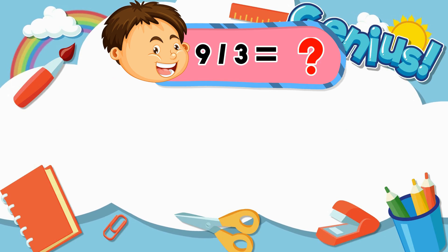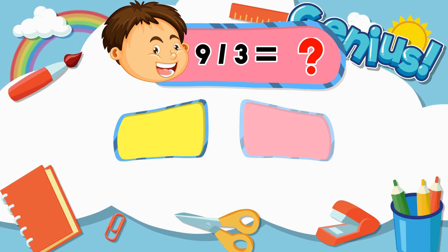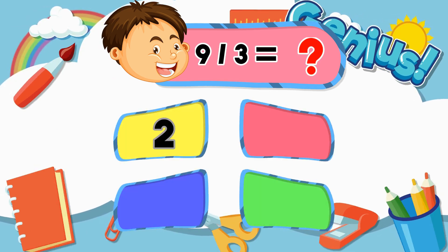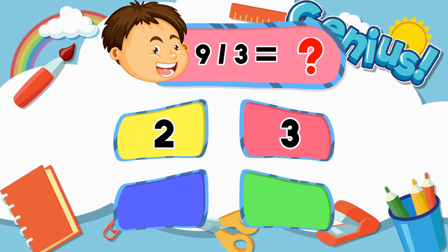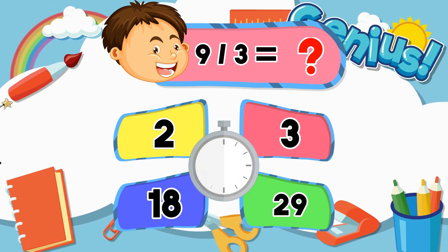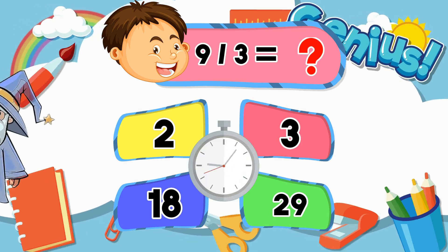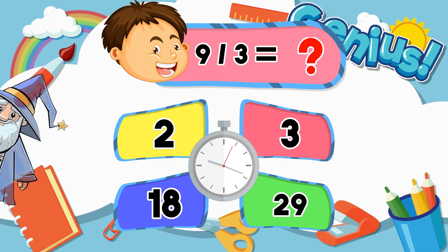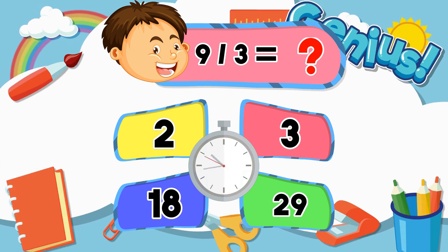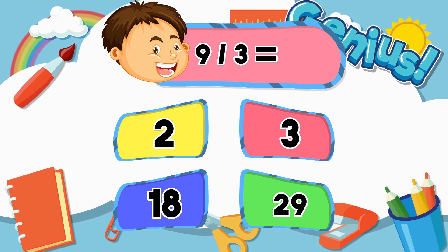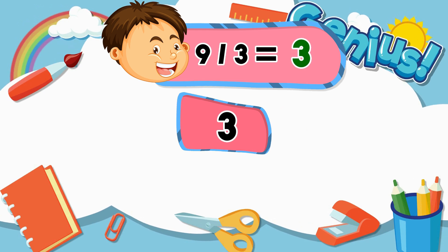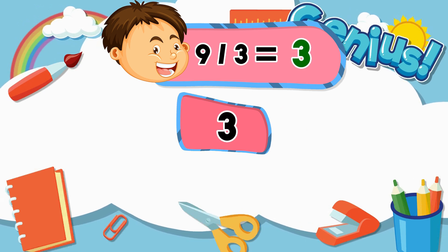What is 9 divided by 3? 2, 3, 18, 20. [Answer:] 3.